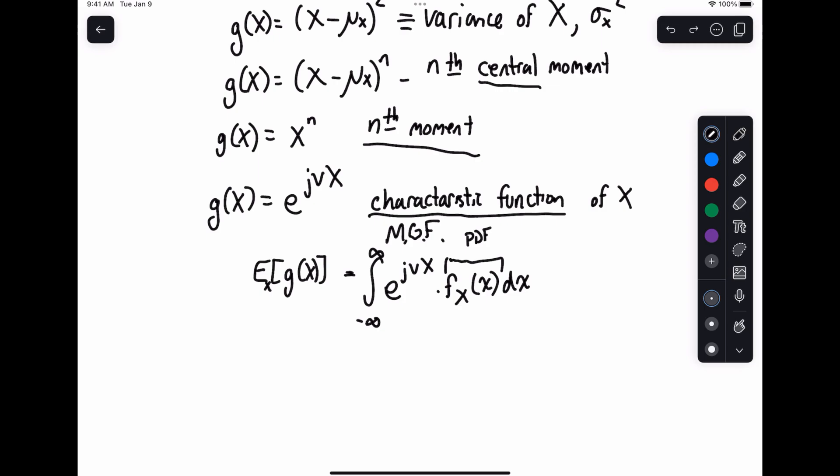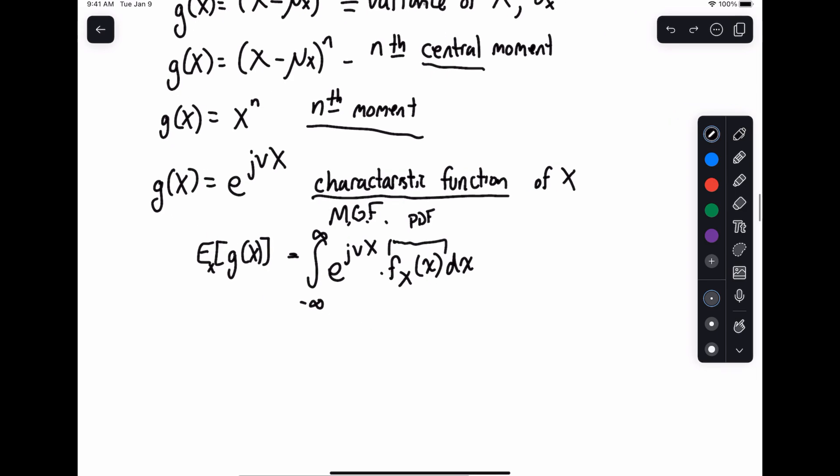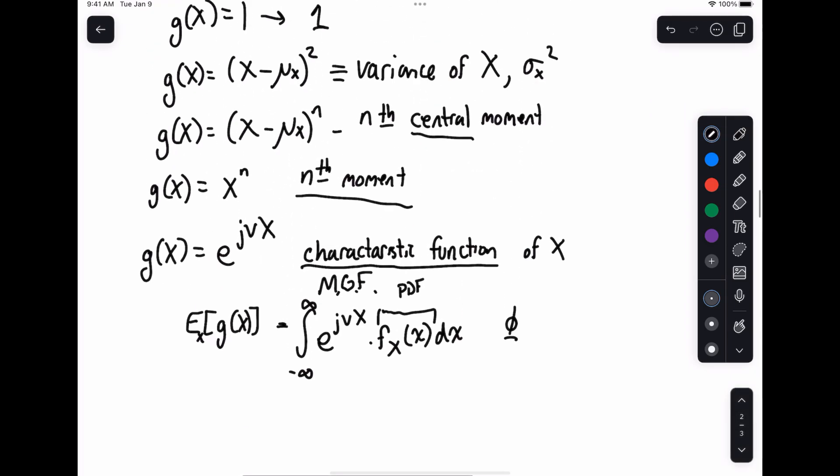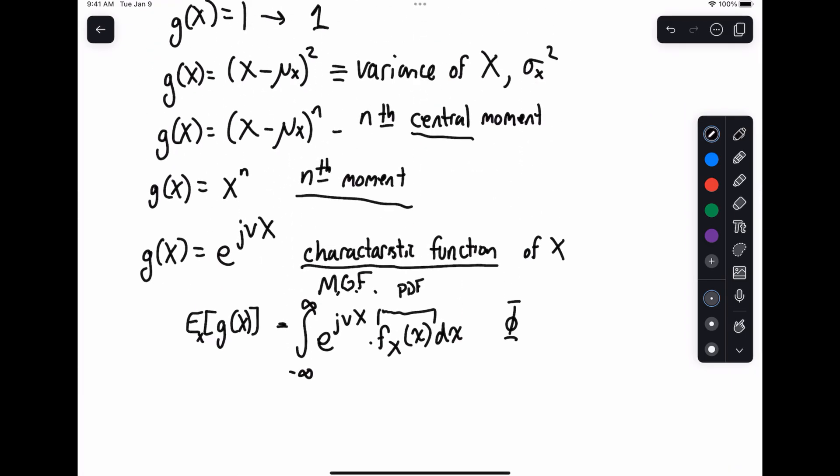Of course, we use nu here as our variable. And often what we do is we represent this by an uppercase letter phi. So phi of x like this, it's a function of nu, but taking derivatives and then setting them equal to zero will give you those moments that you're looking for.